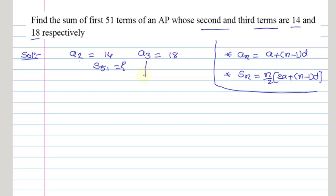Now, here we know A3, the third term. The third term can be written as A plus 2D equals 18, and the second term can be written as A plus D equals 14. Doing subtraction, we get 2D minus D equals 4, so D equals 4.